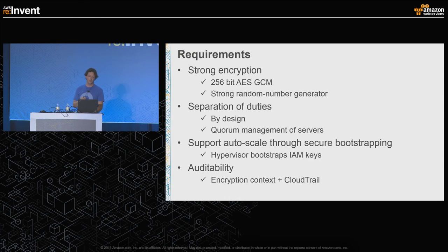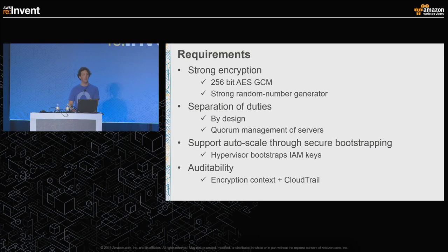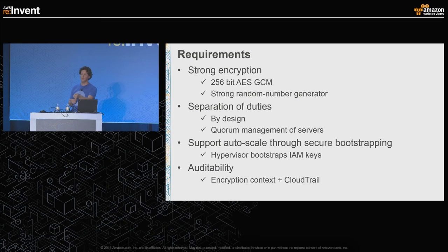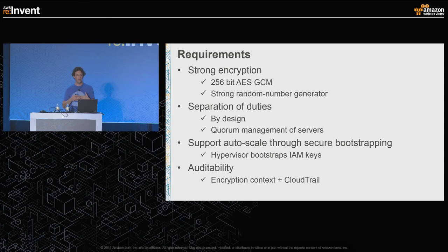Next we wanted to support autoscale. The only secure way — without using a key management service — to have keys only reside in memory is to provide them to the service at startup time. The problem is you need an operator there to provide those keys. By using the KMS-IAM bootstrapping model for getting credentials onto our EC2 instances, we were able to bootstrap servers and autoscale them without having an operator present. Lastly we wanted auditability, and of course you get that with encryption context and CloudTrail.